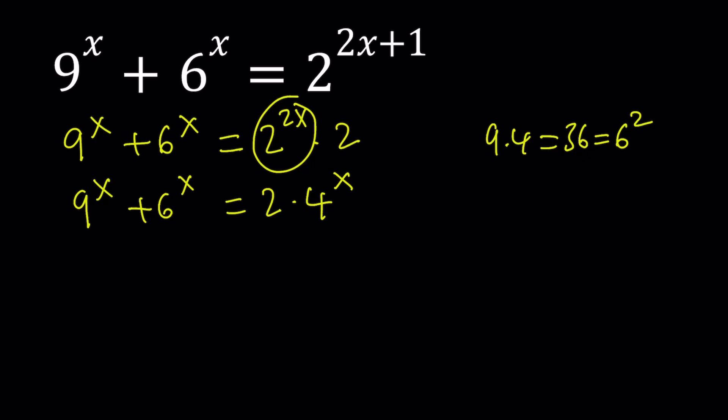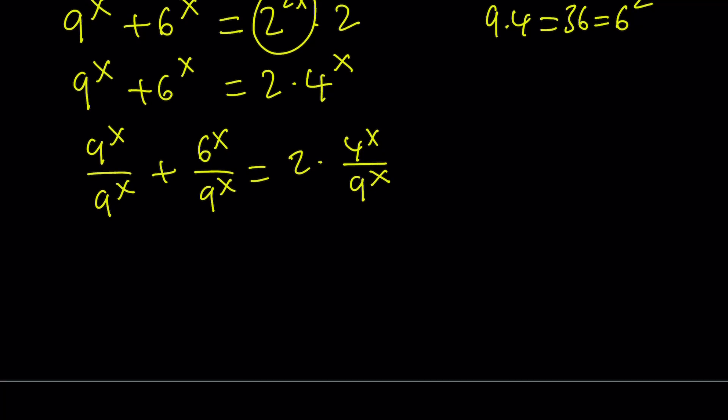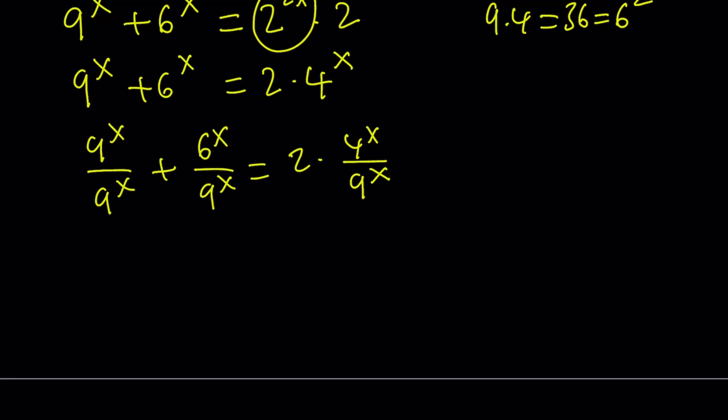We're going to divide everything by the largest power. The largest power here is 9 to the power x. So, let's go ahead and divide everything by that. By the way, you don't have to do it this way. Now, 9 to the x divided by 9 to the x is 1. This can be written as 6 over 9 to the power x. x is common. We can just take it out. But 6 over 9 can be simplified into 2 thirds. So, we can write it as 2 thirds to the power x.